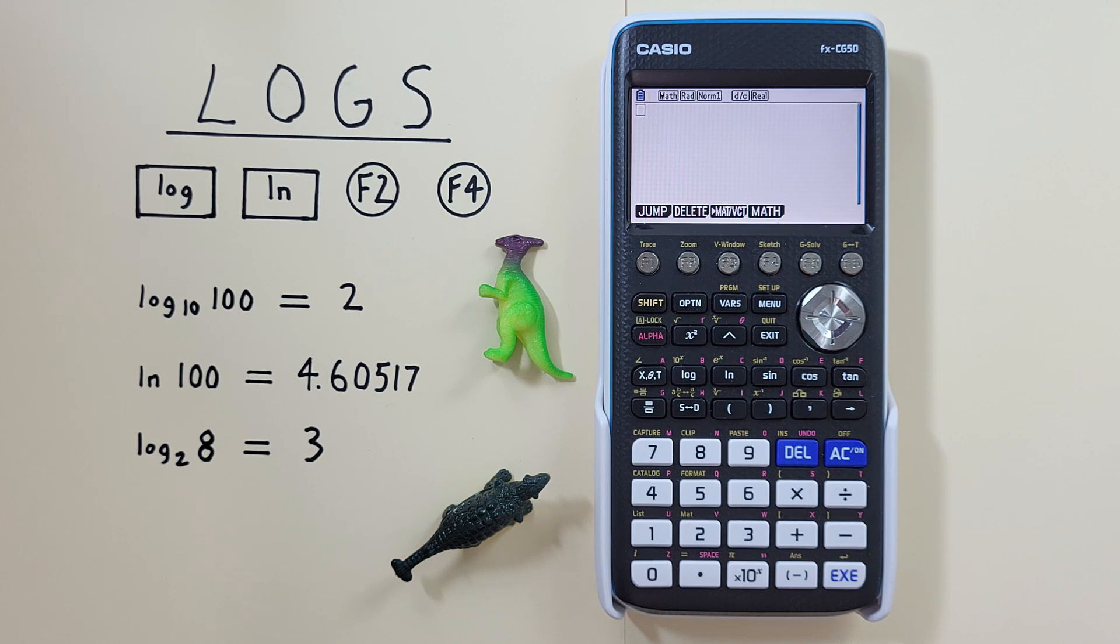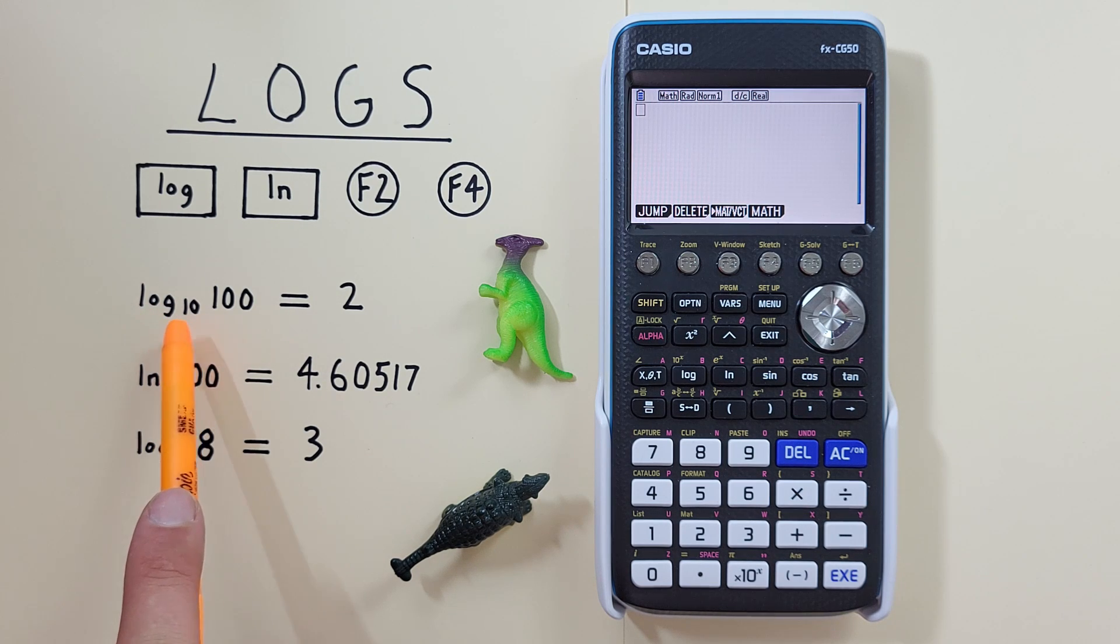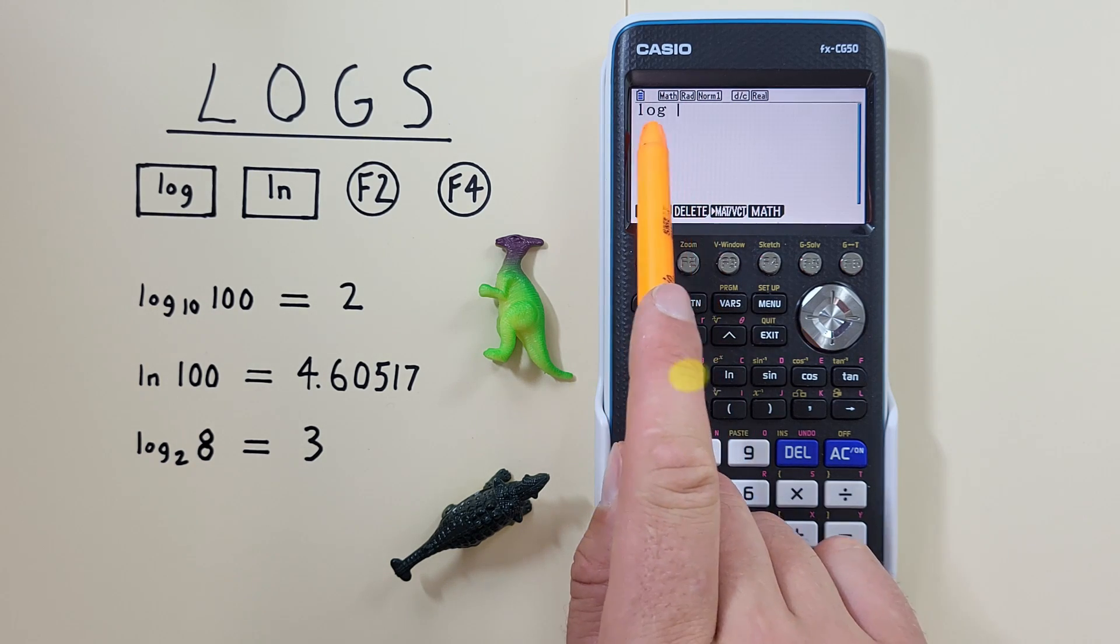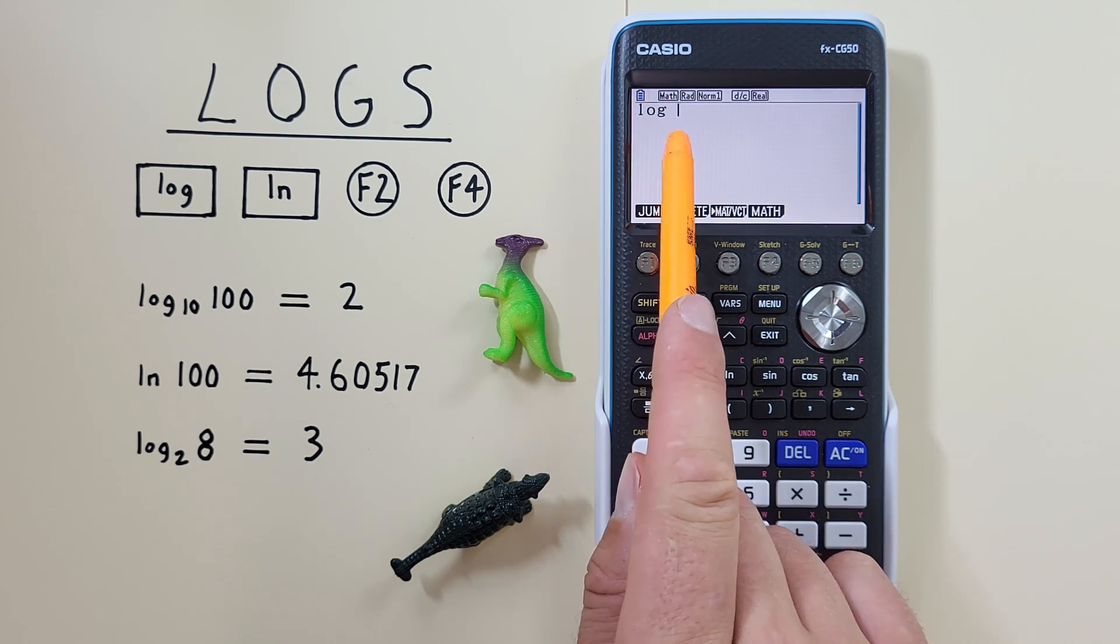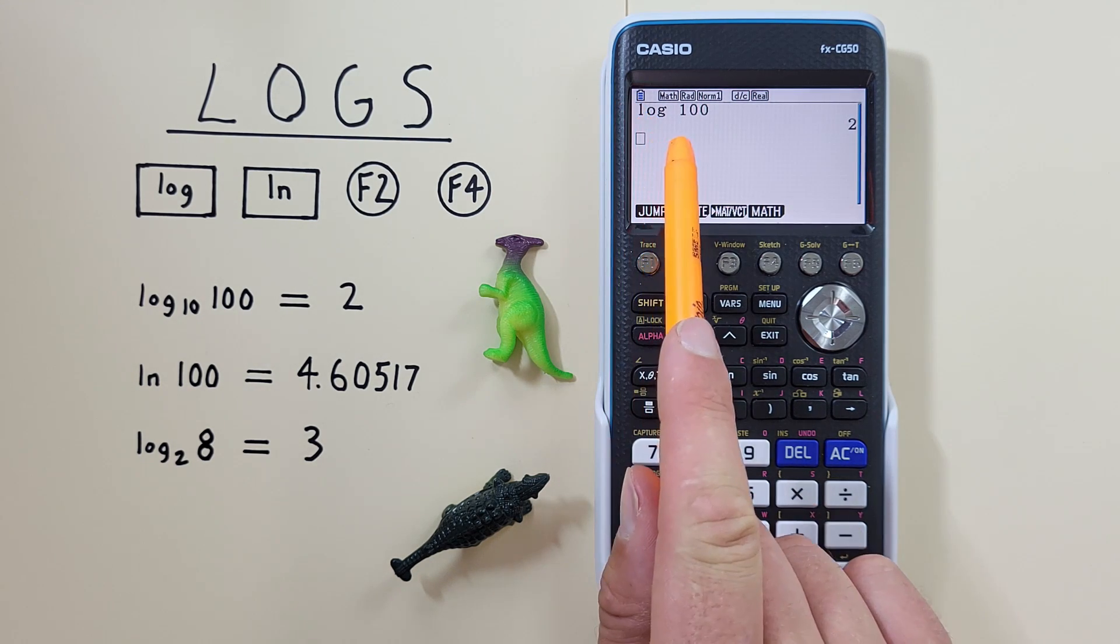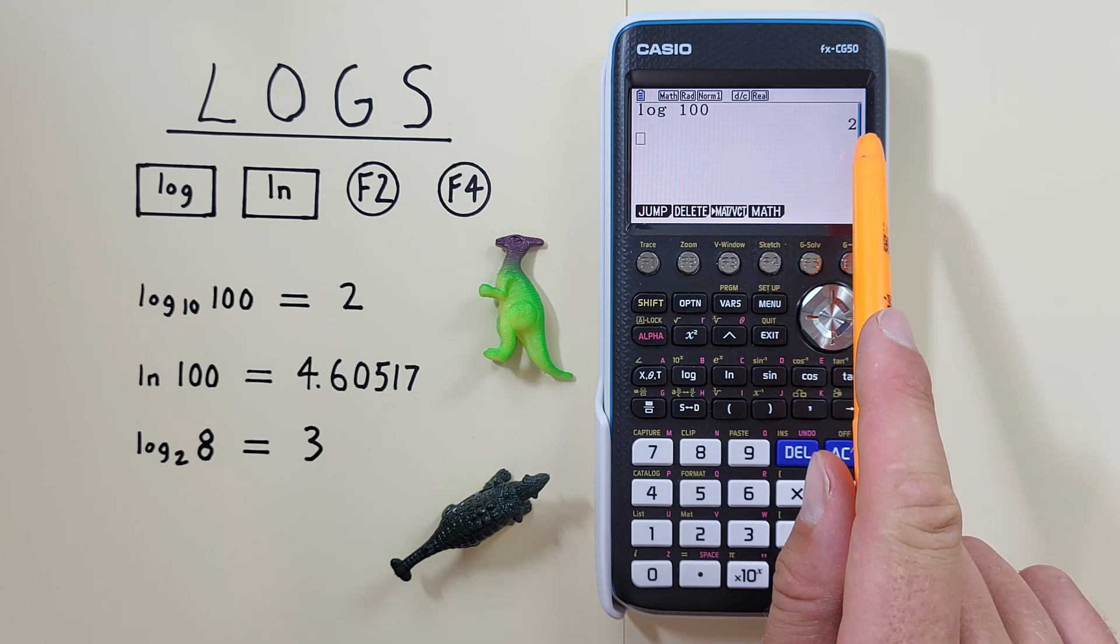The default log base on this calculator is a log base 10. So if we want to find something like say log base 10 of 100, all we have to do is press the log key and there's no visible base 10 but it's there. And then we enter the 100 and hit exe and we see we get log base 10 of 100 is equal to 2.